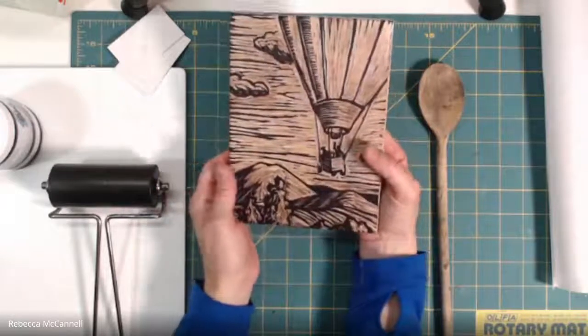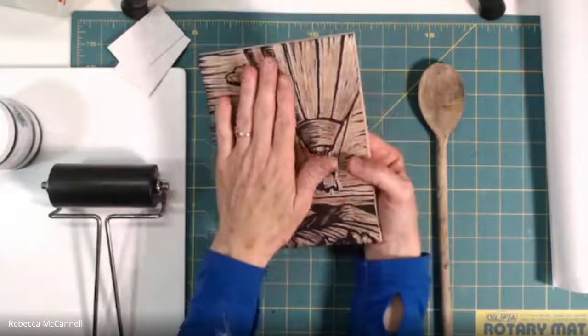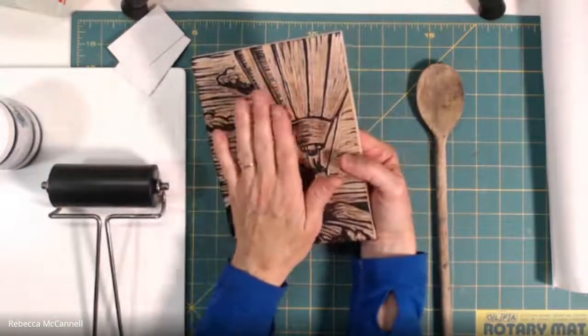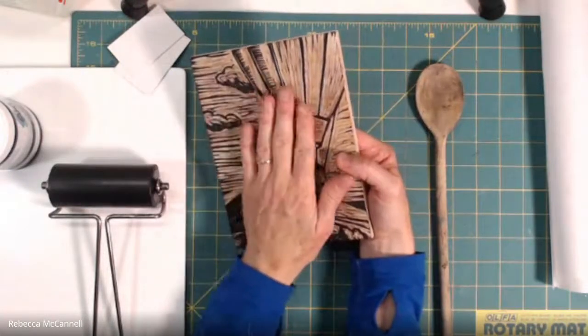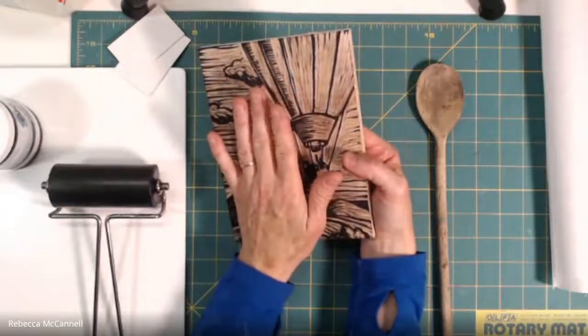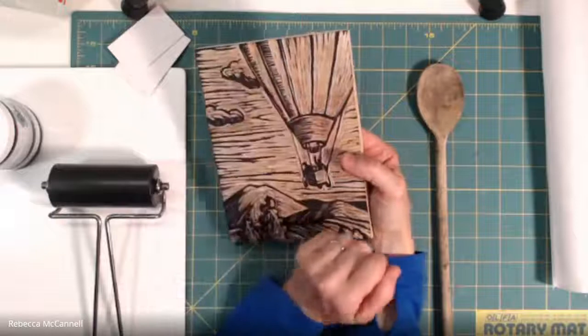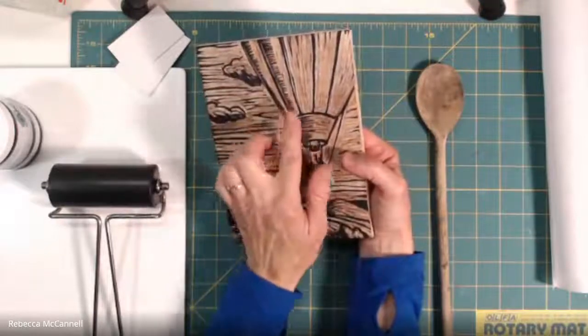The other thing to think about is if there are some areas where you've raised a burr through cutting, where there's little bits of the wood sticking up, it might be smart to sand it lightly with a little bit of 150 grit sandpaper to get rid of those raised areas so you're not interfering with the ink adhering to the plate.